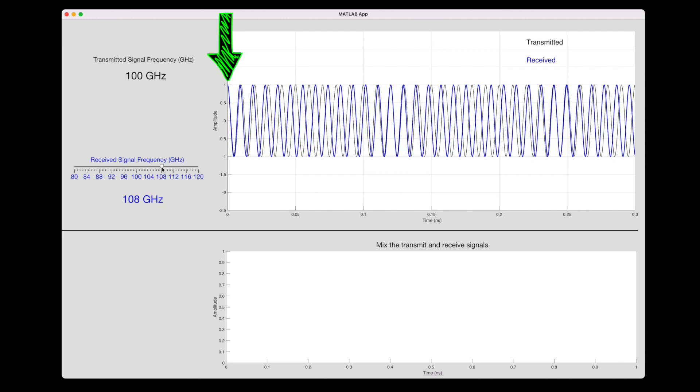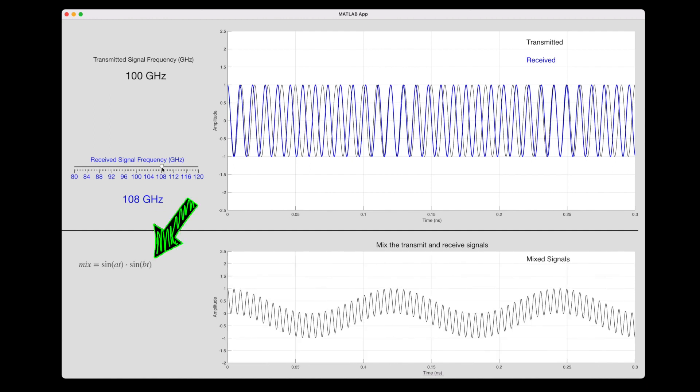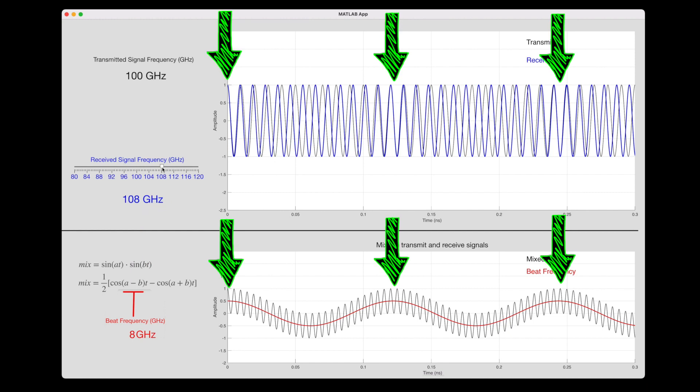At the radar, we have a known 100 gigahertz transmit signal, and we can compare it to the 108 gigahertz received signal. Notice initially these two peaks line up with each other. Then as time progresses, the faster frequency starts to lead the lower one, and eventually the peaks are exactly out of phase. If we keep going, the peaks line up, then are out of phase, then line up again, and so on. This is the beat frequency.